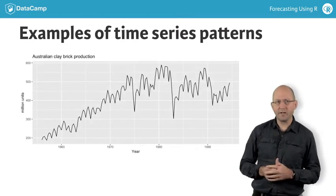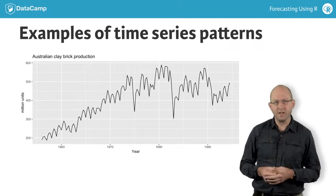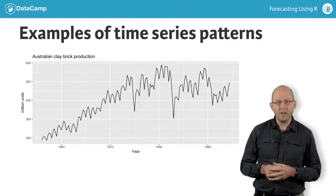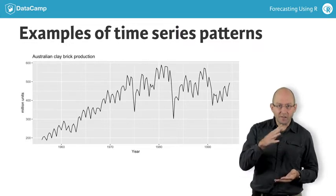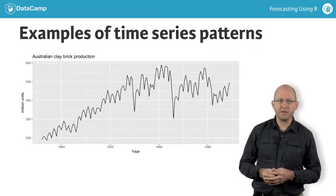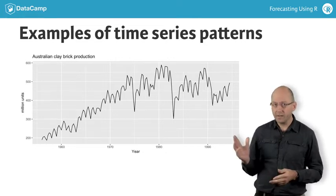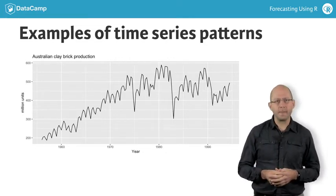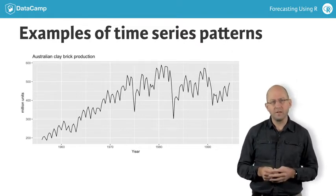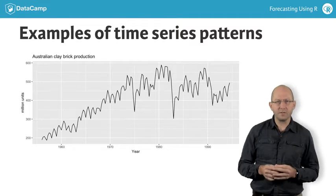Quarterly Australian clay brick production shows both seasonality and cyclicity. The seasonality is seen by the small bumps, one each year. The cyclicity is seen by the longer ups and downs. For example, there was a recession in 1975, another in 1983, and then again in 1991. Between these recessions, the series rises and falls. There is also some trend seen in this graph, particularly in the first half.